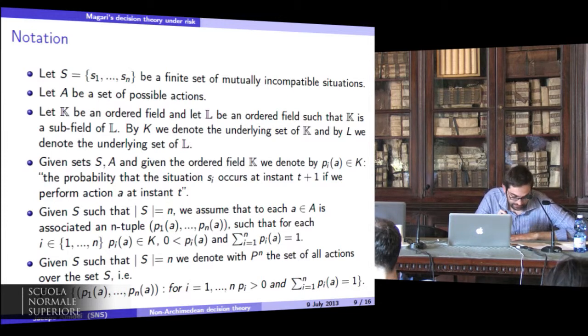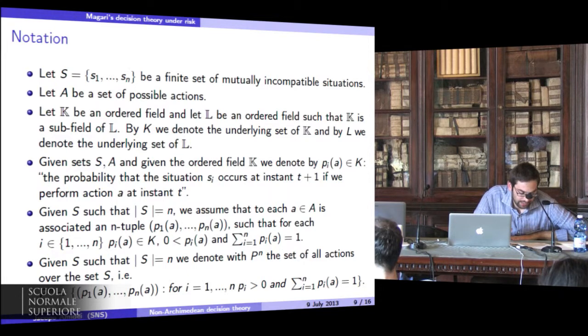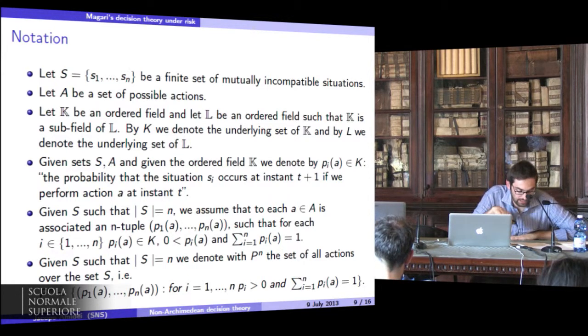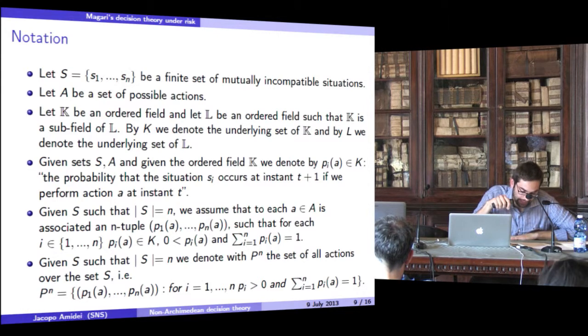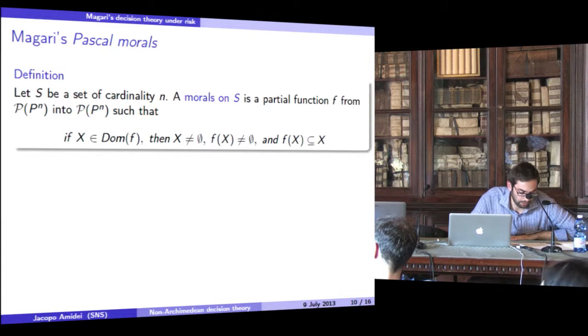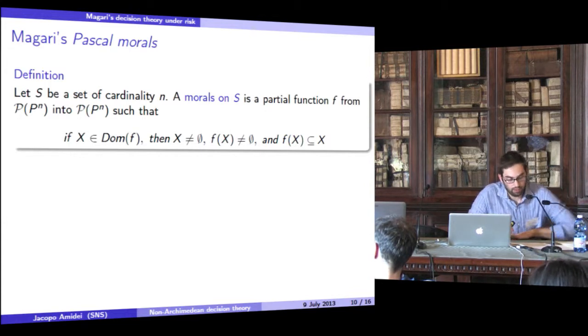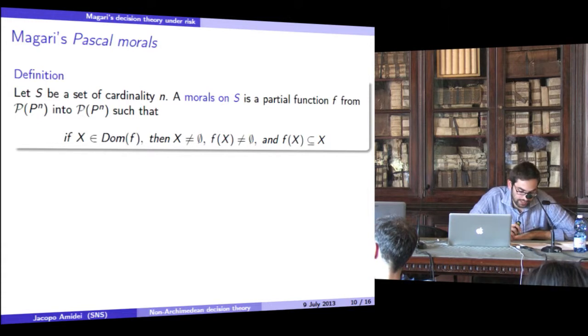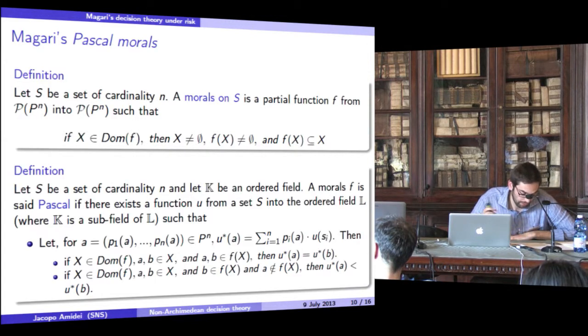A very interesting thing to point out in Magari's decision theory is that he considers his work as part of moral theory. And indeed, he speaks of morals. And in Magari's decision theory, a moral F is a way to choose among a set X of possible actions, the subset F of X, consisting of those actions which are considered the best ones among all actions in X.